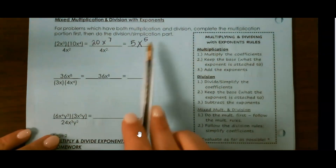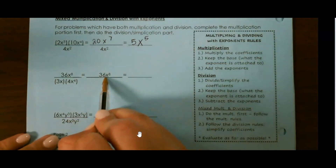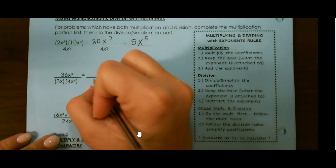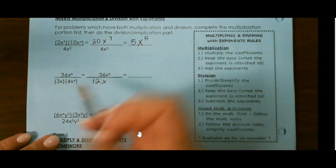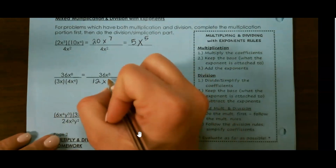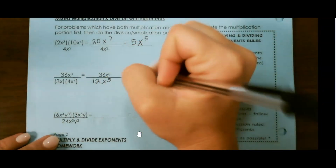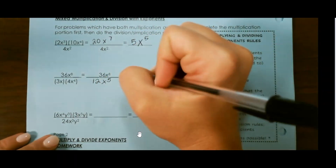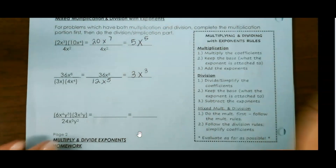And that's as far as we can go — we can't evaluate this any further. For our next one, this has already been done. So 3 times 4, our coefficients, is 12. Keep the base. This is x to the 1st power and x to the 4th power, which gives us x to the 5th power. Then we can do 36 divided by 12, which is 3. Keep the base, and 8 minus 5 is 3.